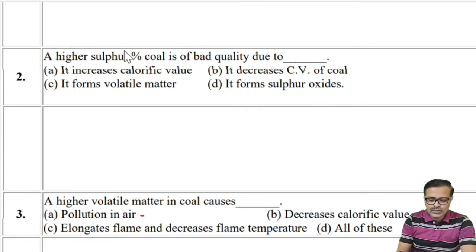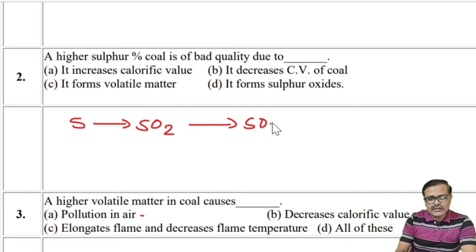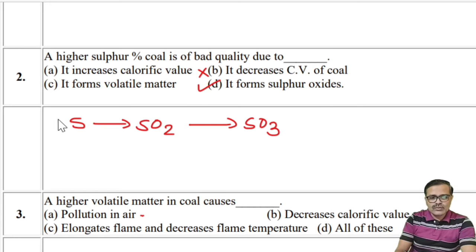Why is a high sulfur percentage in coal bad quality? From school level we know that sulfur produces pollutants like sulfur dioxide, which can be converted into sulfur trioxide. These pollutants are liberated — it does not affect calorific value, nor does it form volatile matter, but it forms sulfur oxides SO2 and SO3. So the answer for this question should be D, the last option.